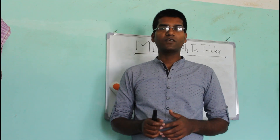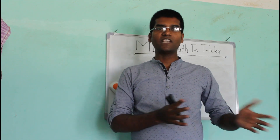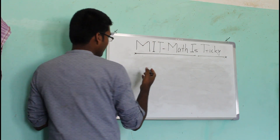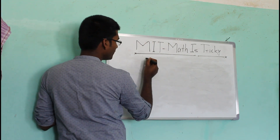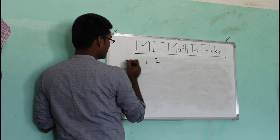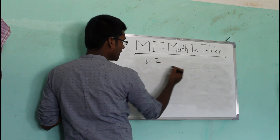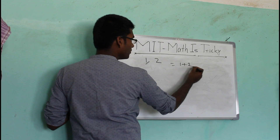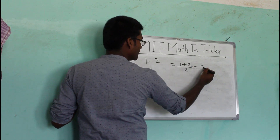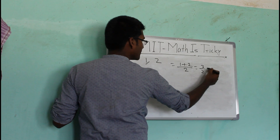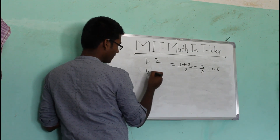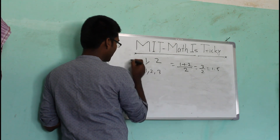Let's first understand the idea and concept. Suppose you have to find the average of 1 and 2. What we do is: 1 plus 2 divided by 2 — that's 3 by 2, so the answer is 1.5.